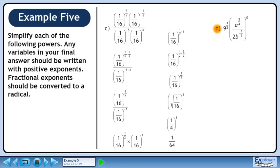Now we'll move on to part d. Everything in brackets is raised to the power of 0, so it becomes 1. 9 raised to the power of 1 half is written in radical form as the square root of 9. The answer is 3.